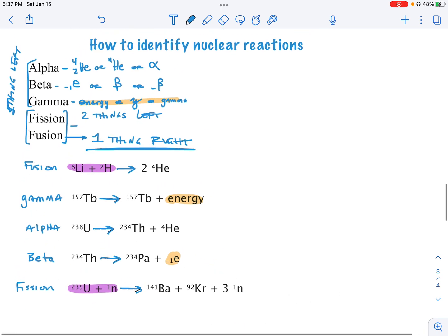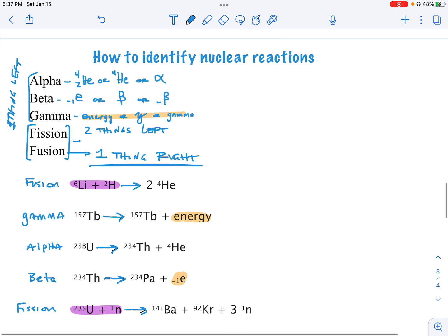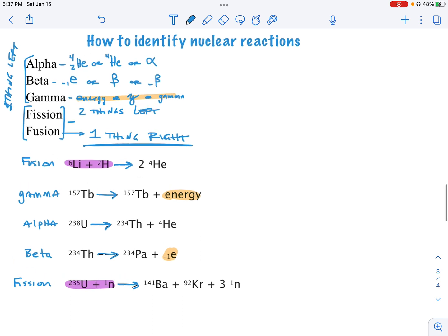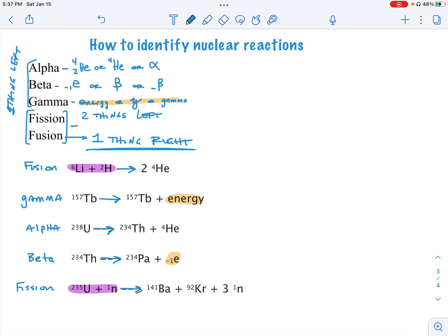So again, identifying these reactions, do it any way you want. Understand that fission and fusion have a major difference in that fission and fusion as highlighted in purple, they're the ones that have two things on the left. So sometimes it's nice to identify those, get those out of the way. And then you're looking at your alpha, beta, gammas.